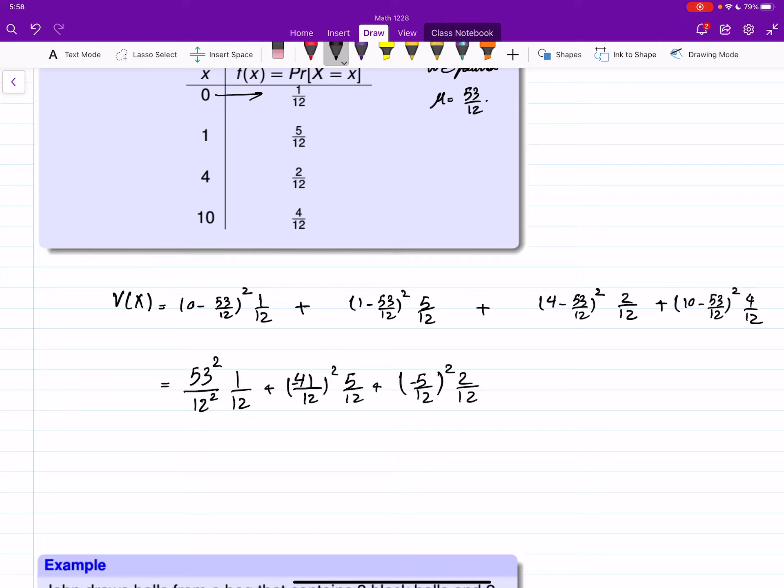4 minus 53 over 12 is negative 5 over 12, squared times 2 over 12. And 10 minus 53 over 12 is 67 over 12, squared times 4 over 12. The numbers are huge and I don't want to calculate them all, but you can do a little more simplification. In all the denominators you have 12 squared times another 12, so this will be 12 to the power 3 in the numerator.